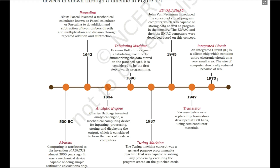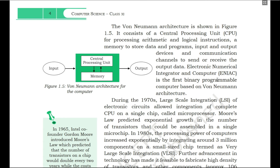Now the question is: what was the Von Neumann architecture that affected modern day computers so much? According to Mr. Von Neumann, everything input to the computer first goes to memory, and the CPU picks that data or program from memory for execution. The Von Neumann architecture consists of a central processing unit — the CPU — for processing arithmetic and logical instructions, and this computer has a memory to store data and programs.